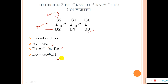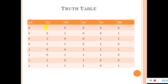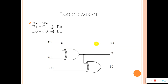We need three bits of gray code. These are all combinations — two to the power three, that is eight combinations, from zero to seven. By using the previous formula, we have the truth table already done. By using this truth table, we design the logic circuit diagram of the code converter. B2 is equal to G2. Then B1 equals G1 XOR B2, and B0 equals G0 XOR B1.